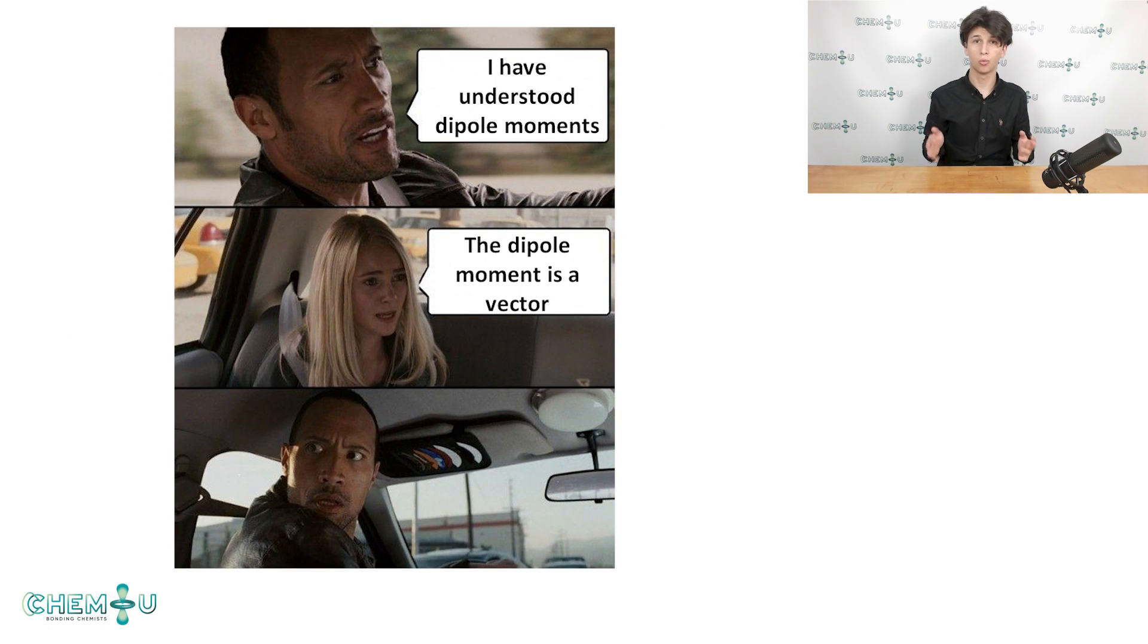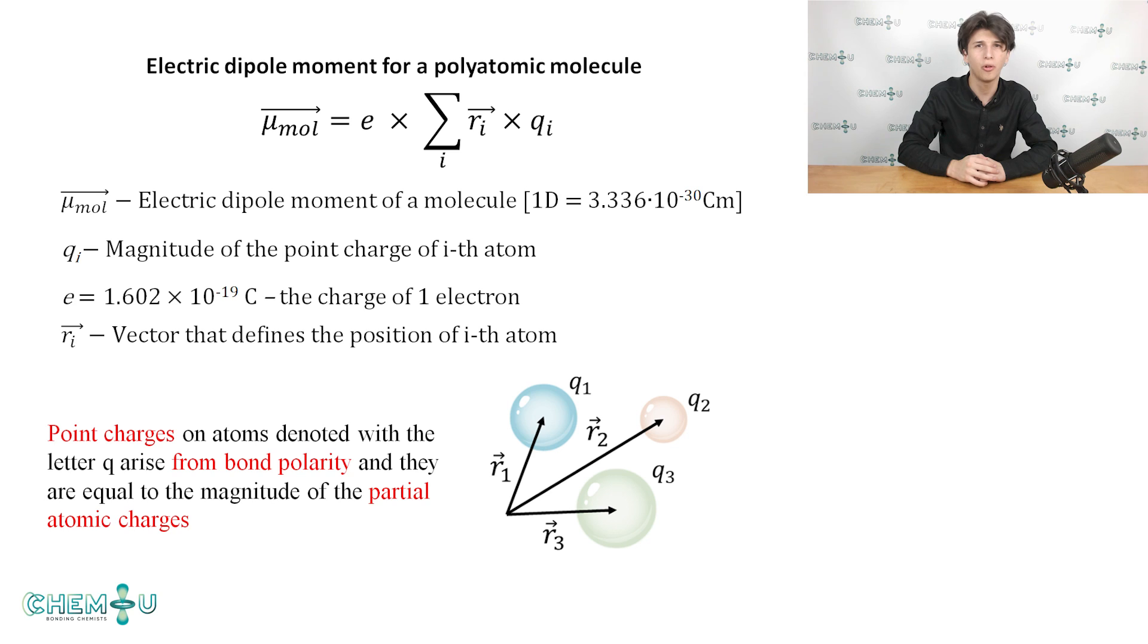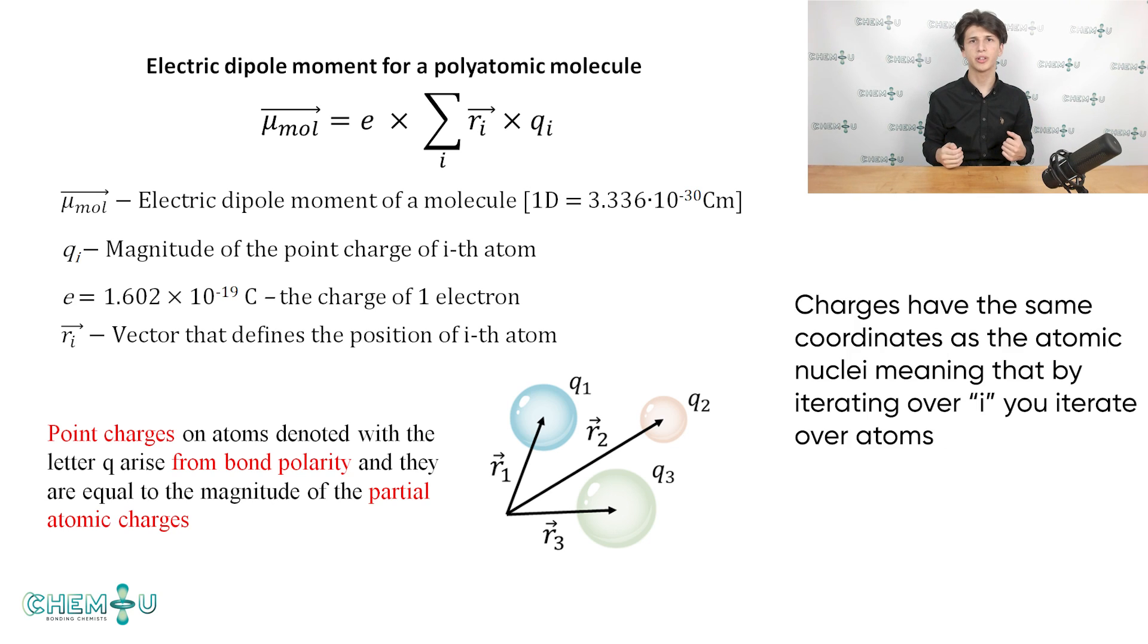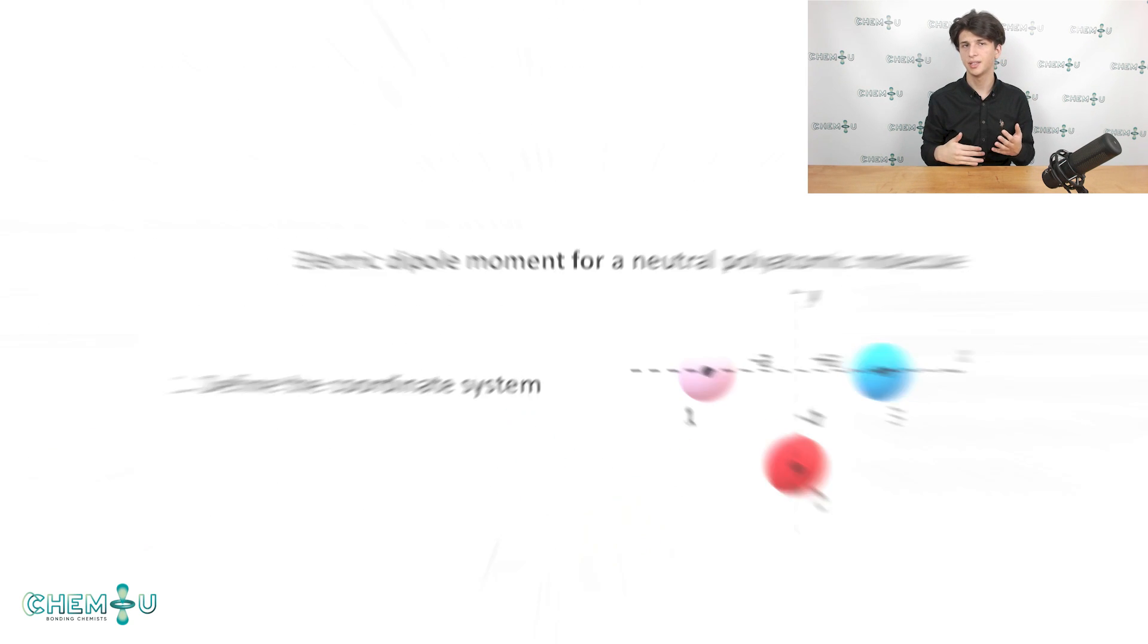But the world would be much simpler if all quantities were scalar. Unfortunately, it's not and the dipole moment is a vector quantity, meaning that it has a direction in space. And what do we use to show direction? Hell yeah, vectors! So the dipole moment of a polyatomic molecule is a vector and it can be calculated with the formula represented on the screen. Here the Q is the magnitude of the ith charge and R is the vector representing the position of the ith charge. Of course, we can assume that the charges have the same coordinates as the atomic nuclei, meaning by iterating over i, you iterate over atoms.